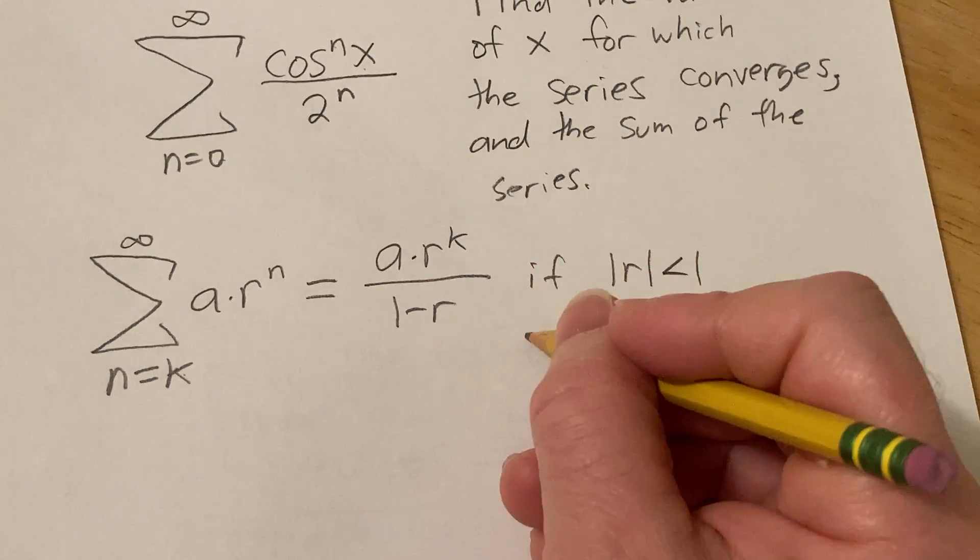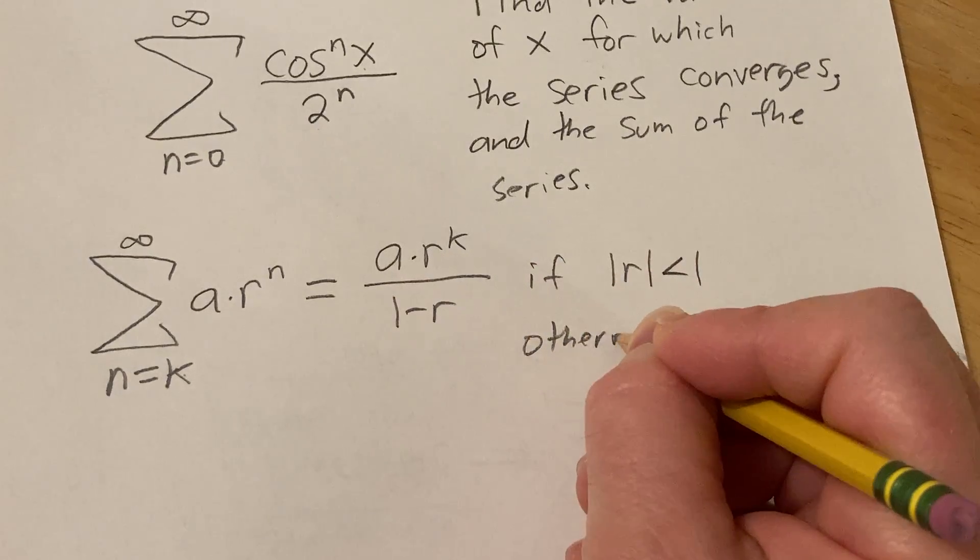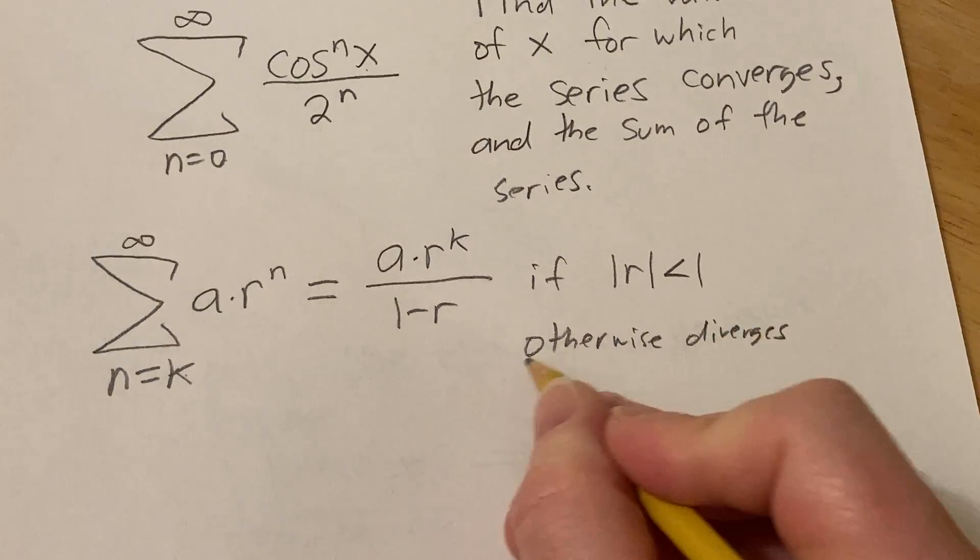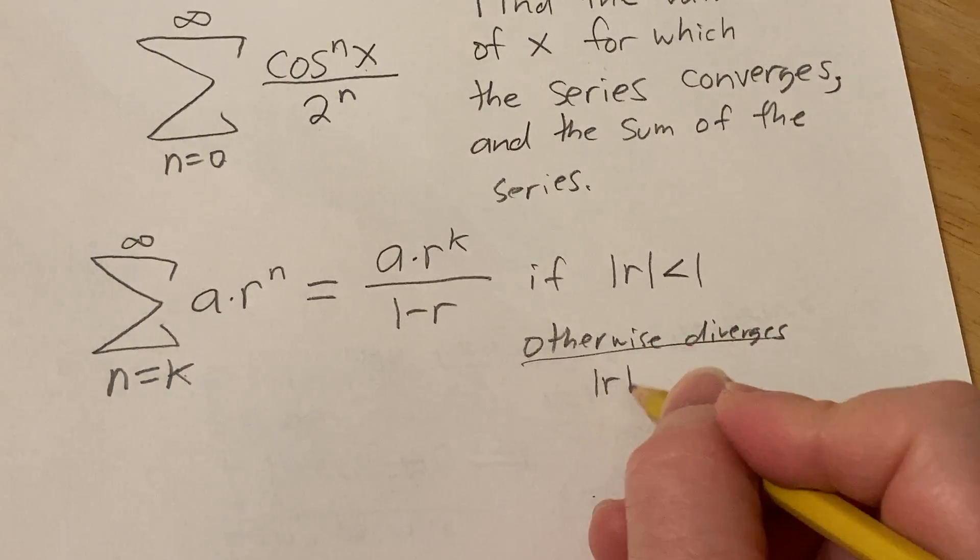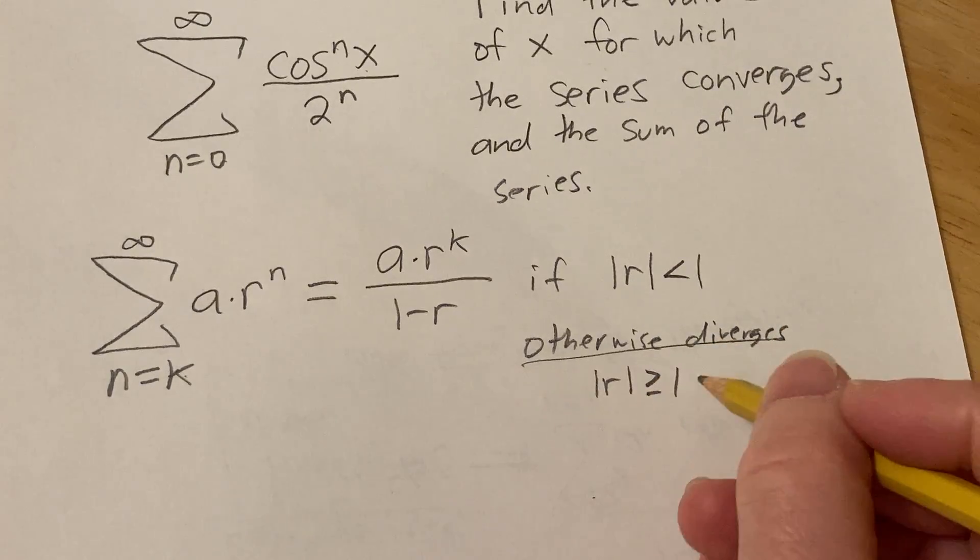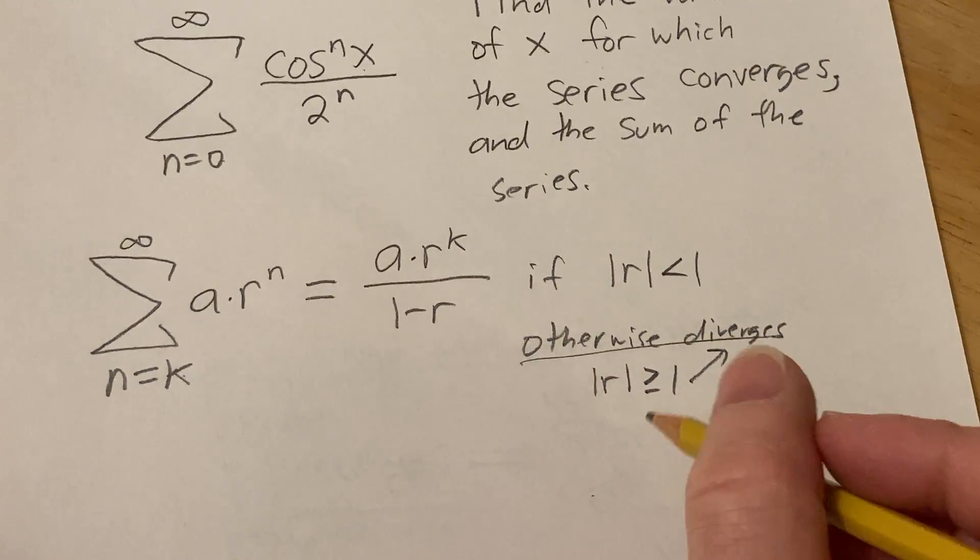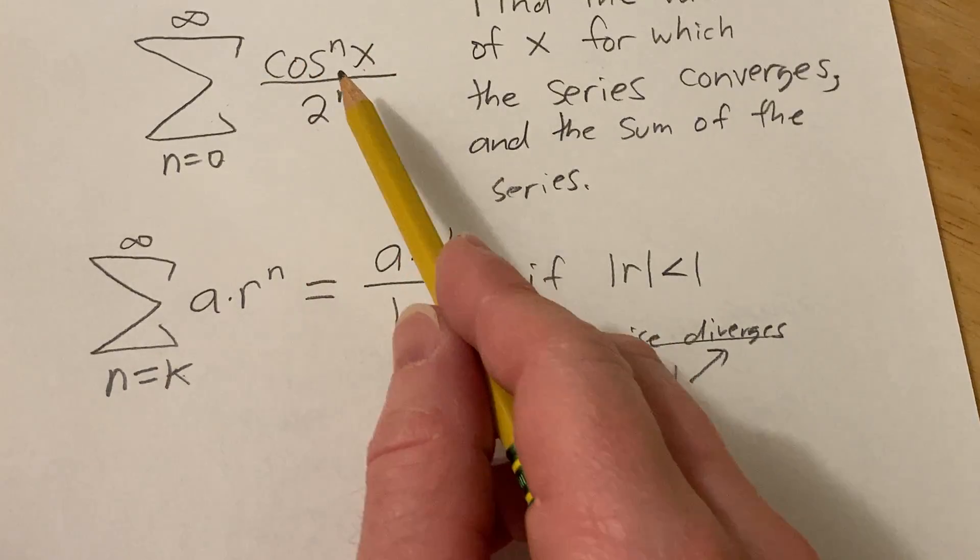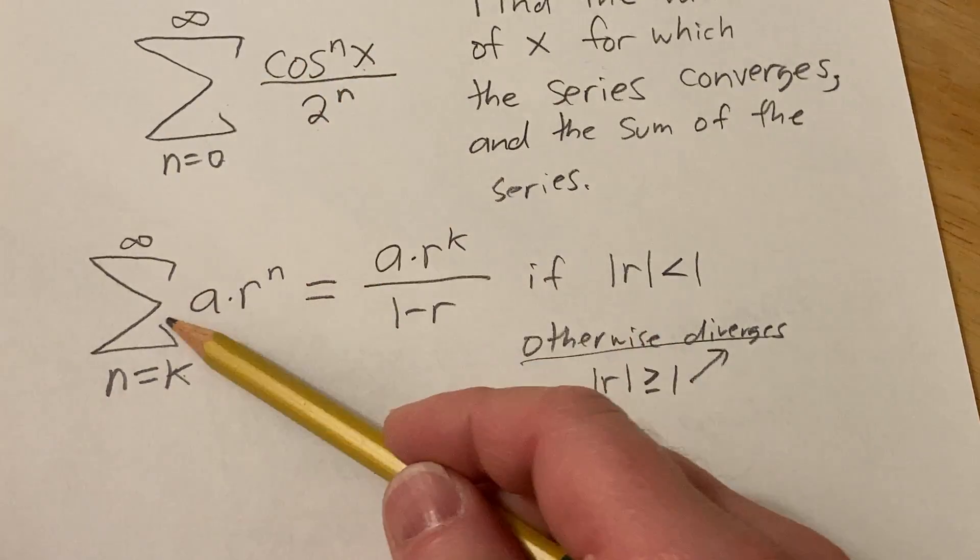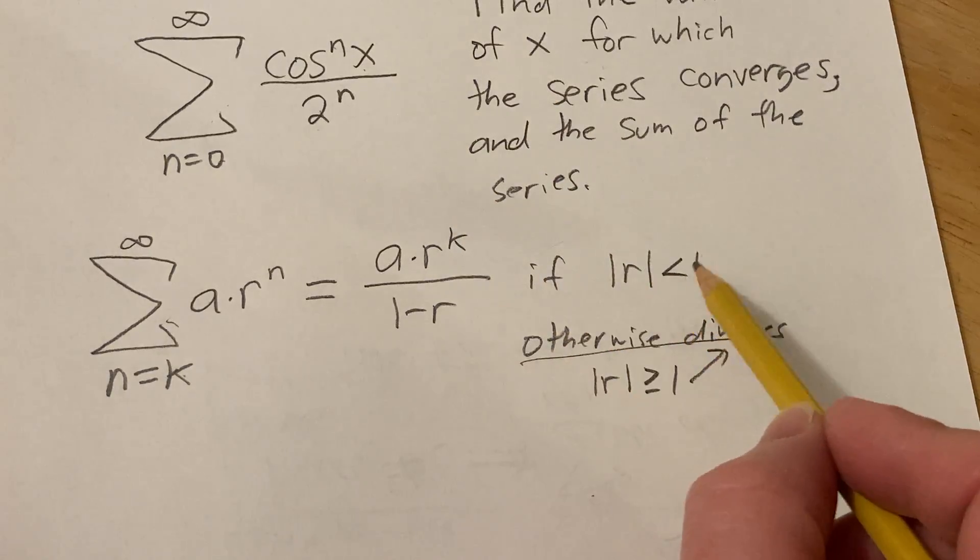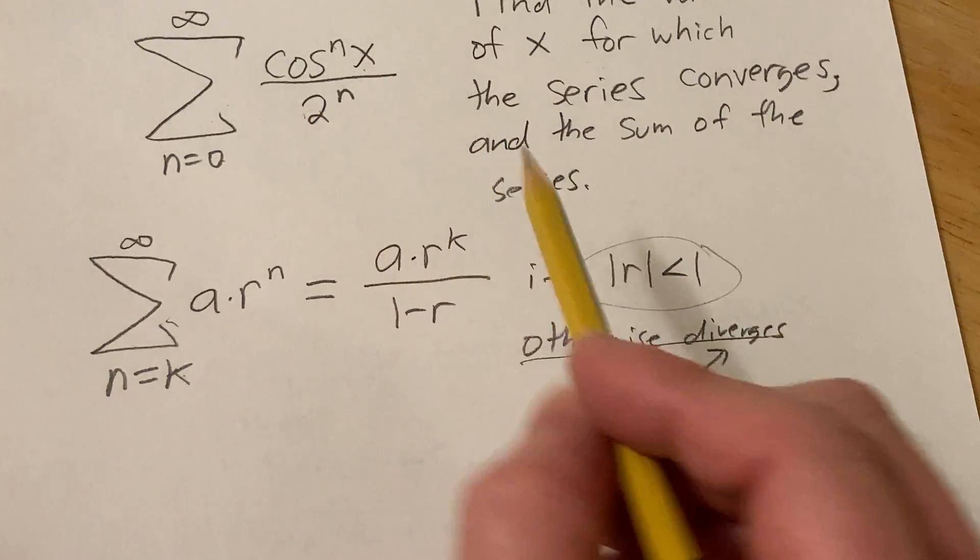If otherwise it diverges. So if r is equal to or greater than 1 in absolute value, then it diverges. So in this problem, we basically have a geometric series, and so we have to basically put this in this form so we can apply this formula. We also should verify why it converges, so we should verify this condition in this problem.